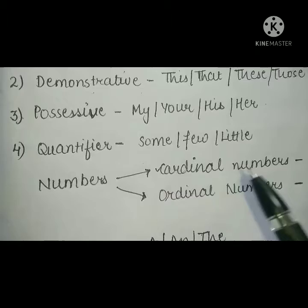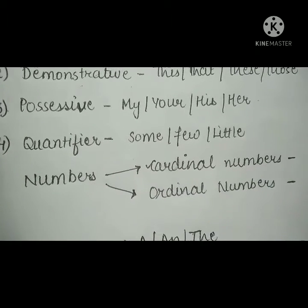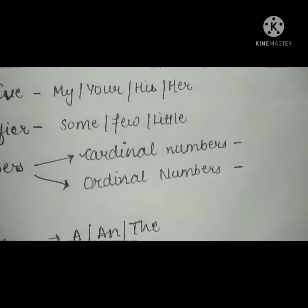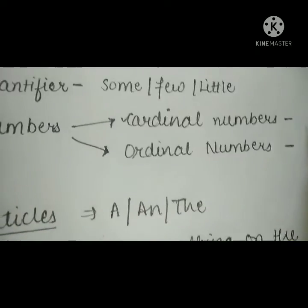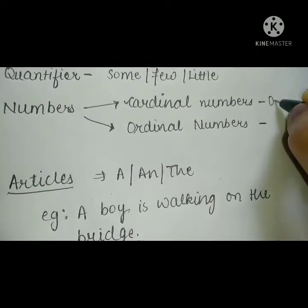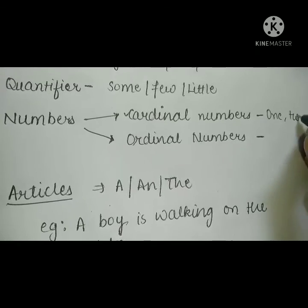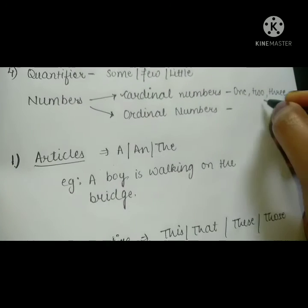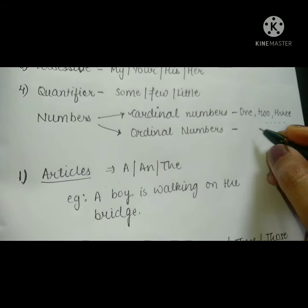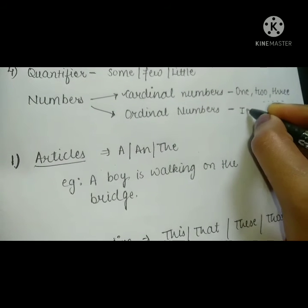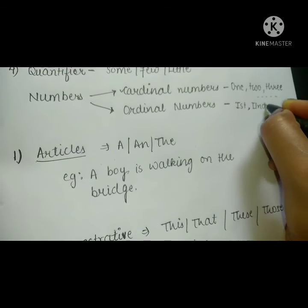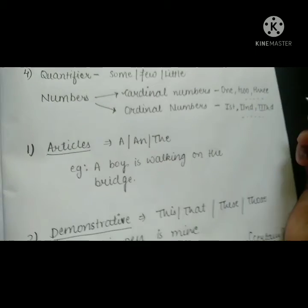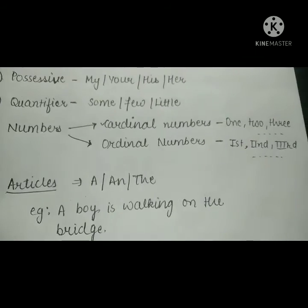For numbers, we will have cardinal numbers and ordinal numbers. Cardinal numbers are: one, two, three, and so on. And if we look at ordinal numbers, we have first, second, third, and so on. So cardinal numbers and ordinal numbers — I think everything will be clear.